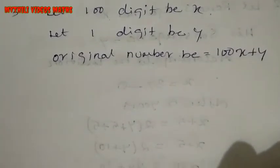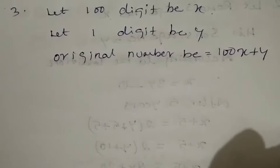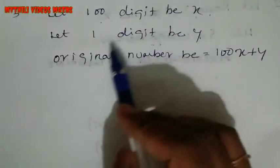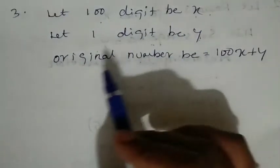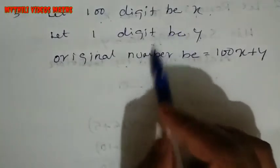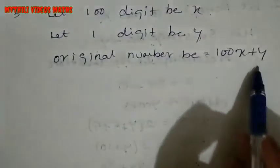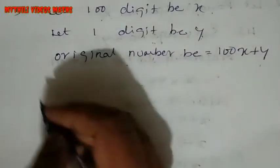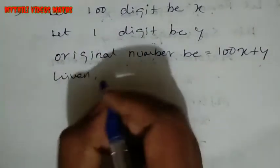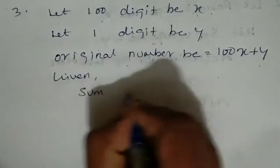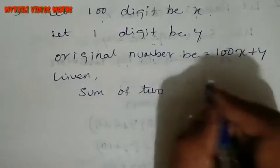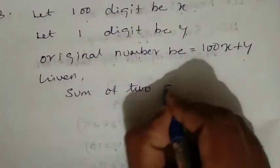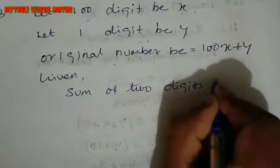The sum of the two digits — the hundreds digit and the units digit — is 13.